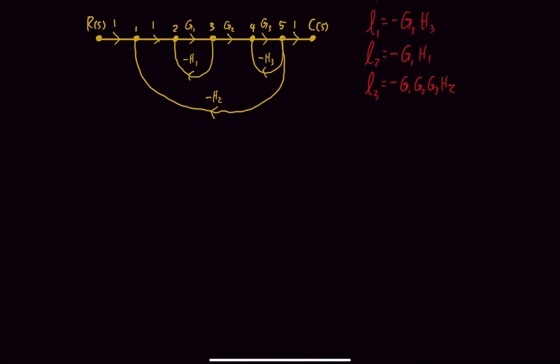So now we can get to finding out what our delta is. So our delta, it's equal to 1 minus the sum of single loops plus the sum of loop pairs not touching minus the sum of loop triplets not touching and so on and so forth.